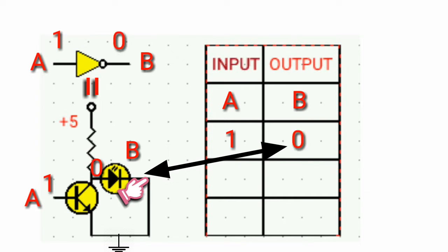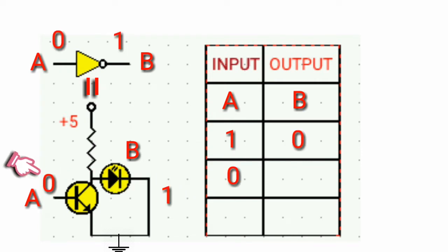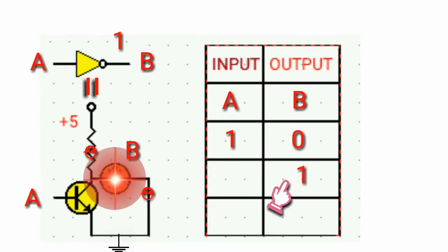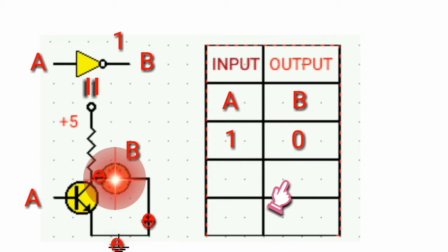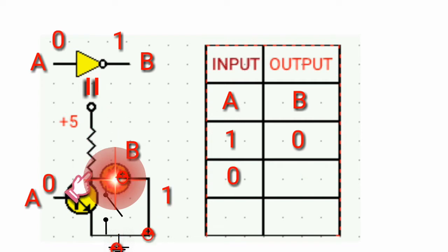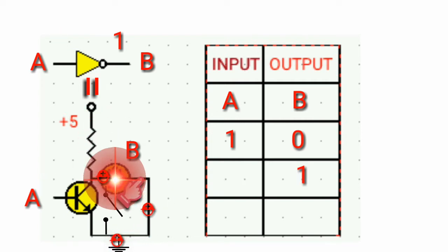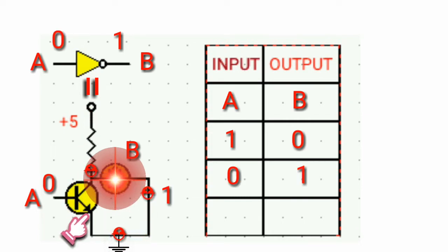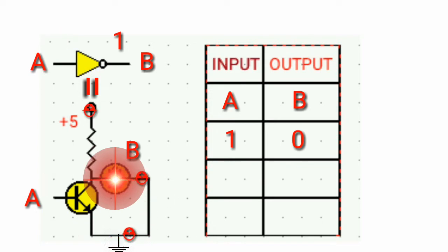Now let's inject logic low at the input. When the input is logic low, then the output is logic high. This is simply because the collector-emitter acts like an open switch. Therefore the current just flows from the resistor, from the collector to the LED, and no current flows from the collector to the emitter since the input is logic low.